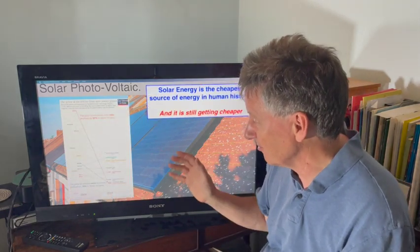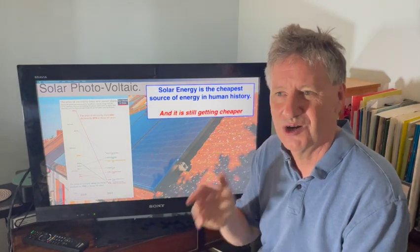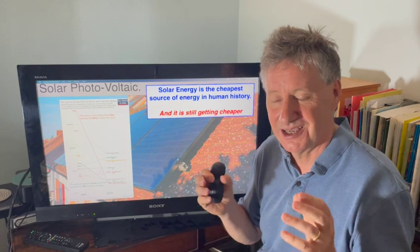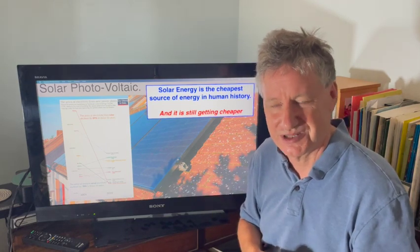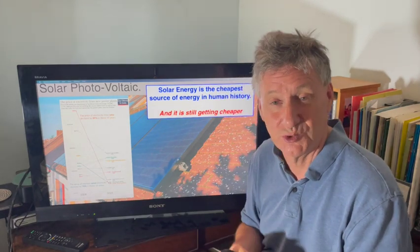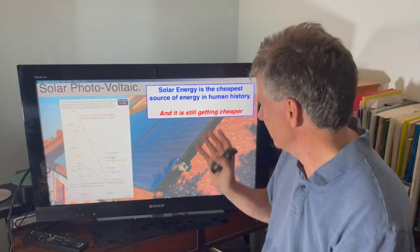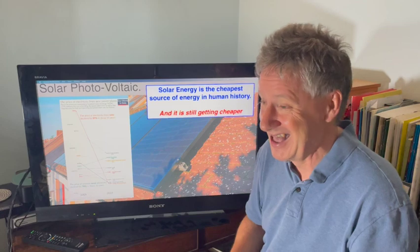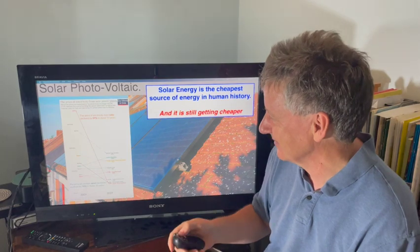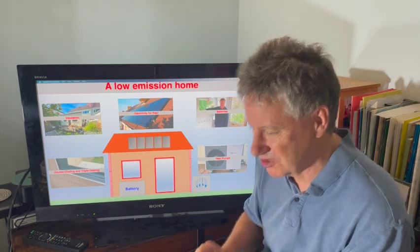The astonishing thing about solar energy is this: it is the cheapest way to make electricity we have ever invented, and it's still getting cheaper year by year — dramatically cheaper than making electricity by burning gas. The only real competitor is wind energy. Solar energy is the cheapest source of energy in human history, and it's still getting cheaper — fantastically good news.